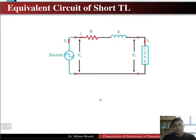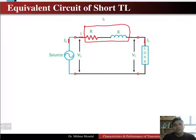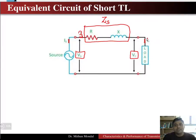The equivalent circuit of a short transmission line consists of a resistance and a reactance in series, known as the series impedance. We have the sending end voltage at the source side and the receiving end voltage at the load side. The sending end current is released by the source, and the receiving end current is taken by the load. Capacitance is neglected and the parameters R and X are lumped.